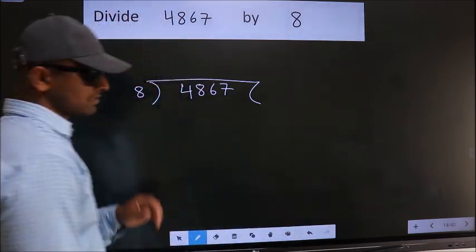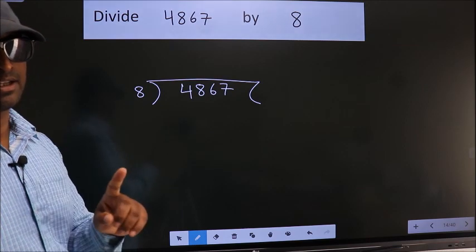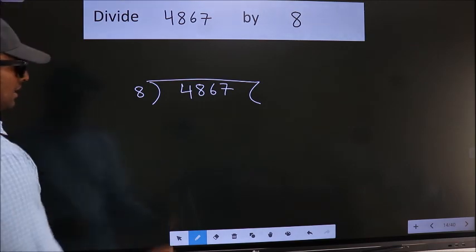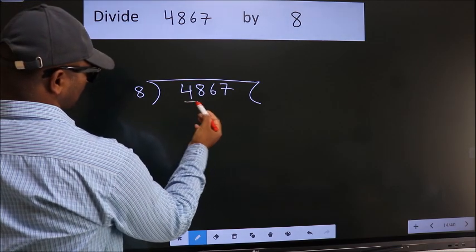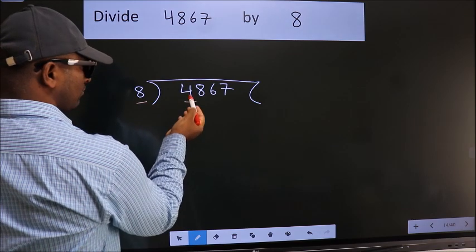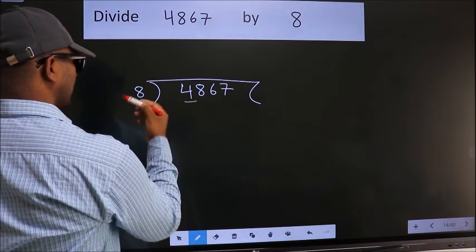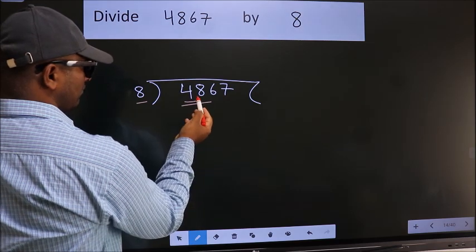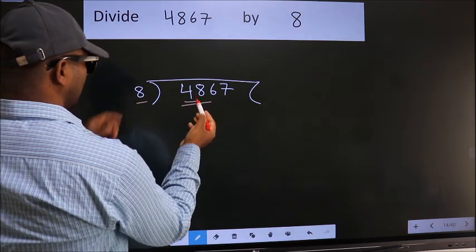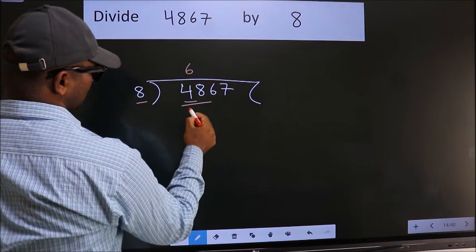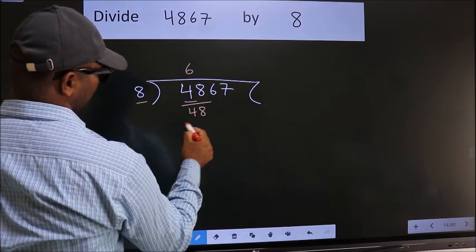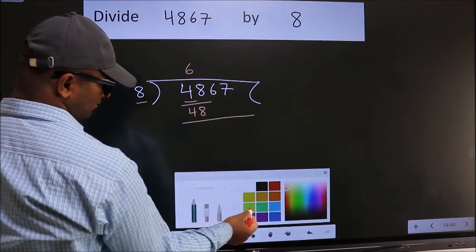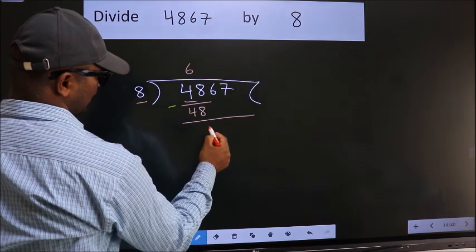This is your step 1. Next, here we have 4, here 8. 4 is smaller than 8. So we should take two numbers: 48. When do we get 48 in the 8 table? 8 times 6 is 48. Now we should subtract. We get 0.